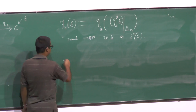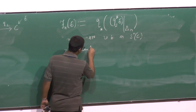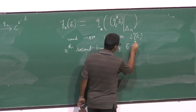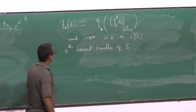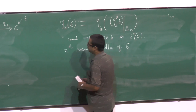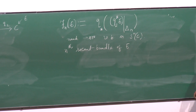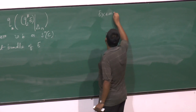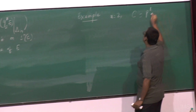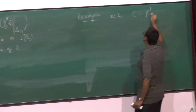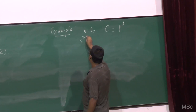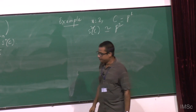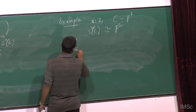This is called the N-th second bundle of E, first introduced by Schwarzenberger. For example, take N = 2 and C = P^1, the projective line. In this case the second symmetric power S^2(P^1) is isomorphic to P^2. So F_2(O_{P^1}(1)) gives O_{P^2} ⊕ O_{P^2}, a rank 2 vector bundle.